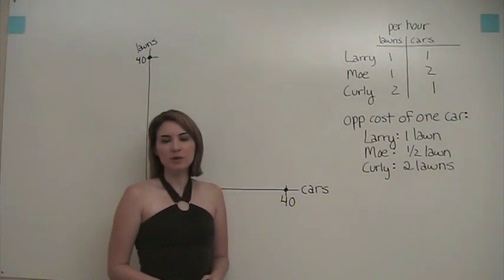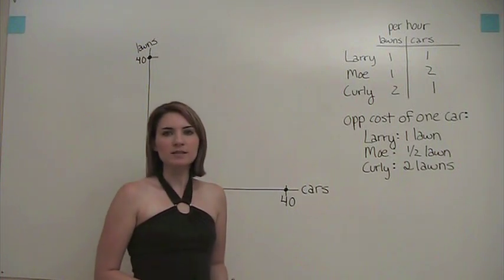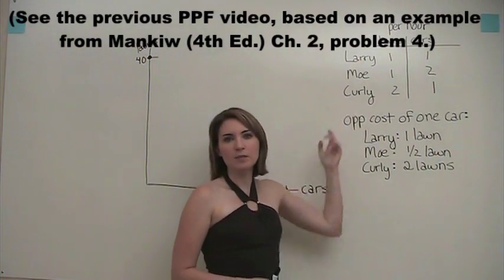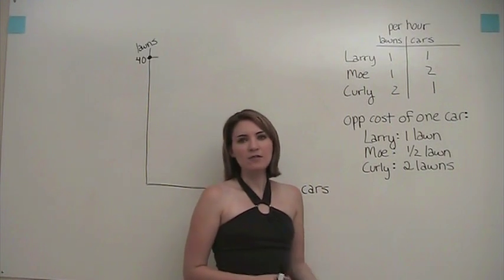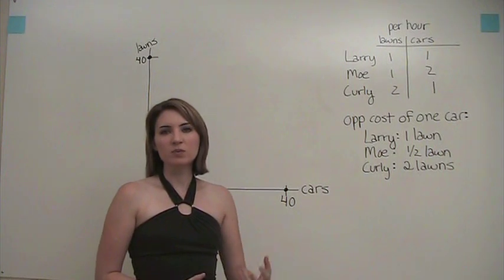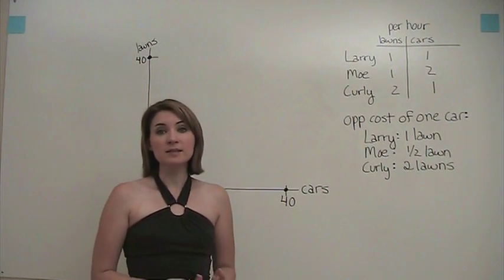Last time when we talked about the production possibilities frontier, we assumed that there were only four distinct points that we could produce at, either where everybody was spending time mowing lawns, everybody was spending time washing cars, or people were split between the two options in some way. We had points A, B, C, and D.